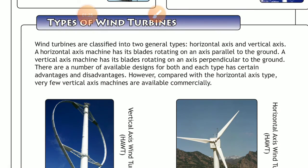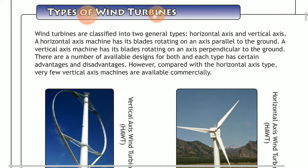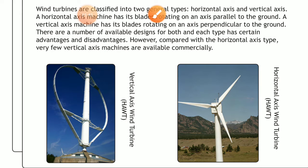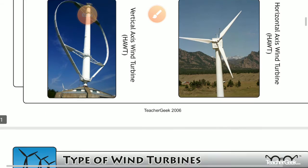We will study various types of wind turbines. Wind turbines are generally of two types: horizontal axis and vertical axis. As you can see in this diagram, this is your vertical axis turbine and this is your horizontal axis turbine. In a horizontal axis turbine, the axis of the blade is parallel to the ground level. In a vertical axis turbine, the blade rotating axis is perpendicular to the ground level.